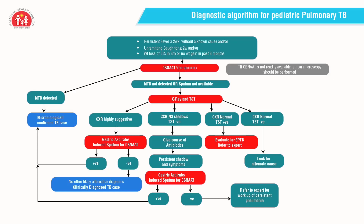You can take help of your pediatric colleagues if you are not a pediatrician yourself. Weight loss or not gaining weight should also be appropriately documented. In pediatric TB, like extra-pulmonary TB, other modalities are also to be kept in mind. Mantoux test of strength 2 TU with PPD RT23 may be used correctly and judiciously to supplement the diagnosis along with other clinical and radiological features.